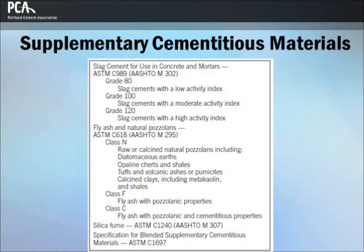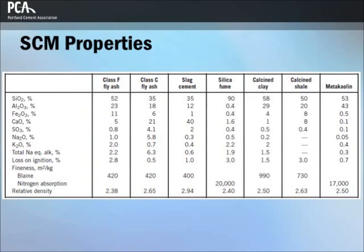This table shows the applicable specifications and classes of SCMs. The following table illustrates typical chemical analysis and selected properties of typical fly ash, slag cement, silica fume, calcined clay, calcined shale, and metakaolin.